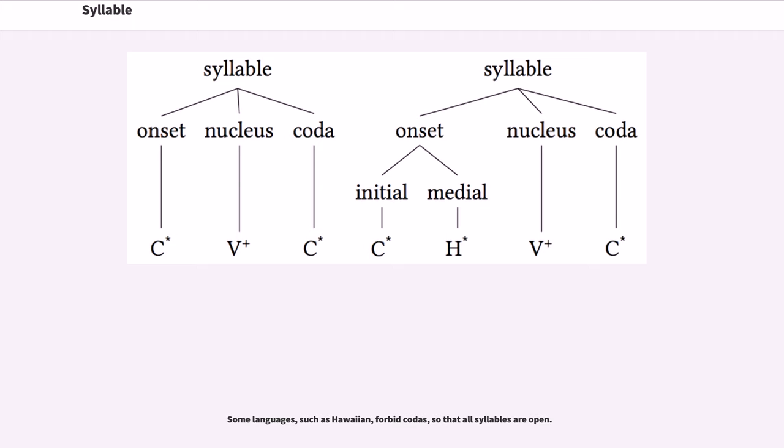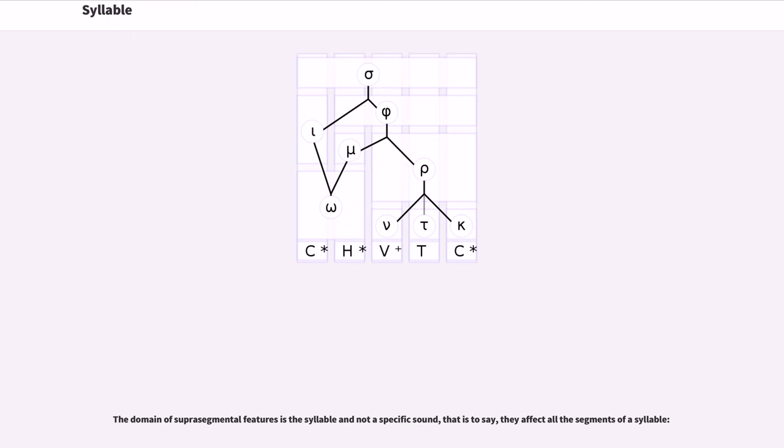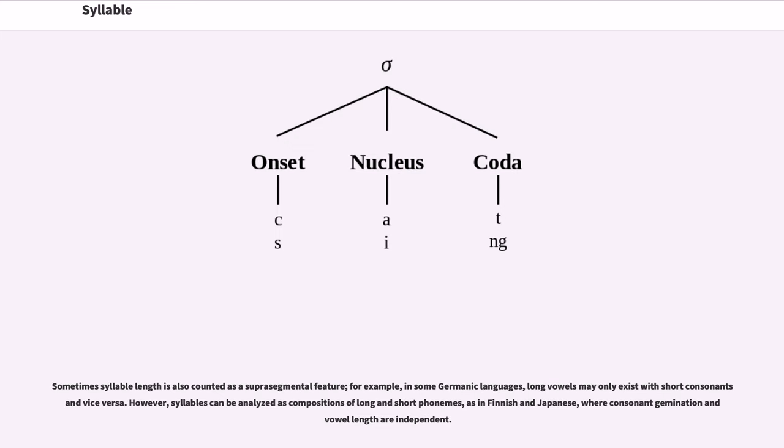Some languages, such as Hawaiian, forbid codas, so that all syllables are open. The domain of suprasegmental features is the syllable and not a specific sound, that is to say, they affect all the segments of a syllable. Sometimes syllable length is also counted as a suprasegmental feature. For example, in some Germanic languages, long vowels may only exist with short consonants and vice versa. However, syllables can be analyzed as compositions of long and short phonemes, as in Finnish and Japanese, where consonant gemination and vowel length are independent.